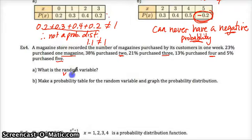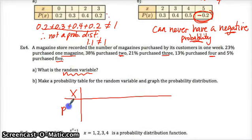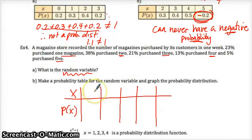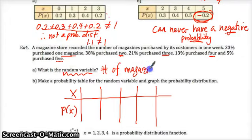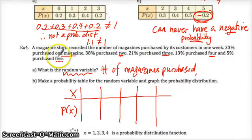So what is the random variable? Think about that — what are we acknowledging? We're going to make our table, which is what part B is asking. Your random variable is what's associated with X. What values are you going to put here associated with X? Hopefully you're thinking: the number of magazines purchased. That is your random variable. And the results are one magazine, two magazines, three magazines, four magazines, or five magazines.